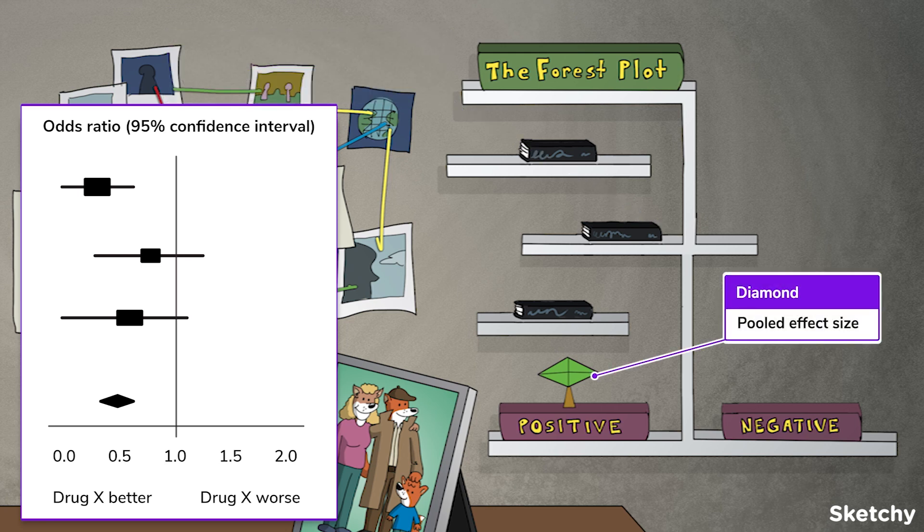If we think of each individual study as a diamond in the rough, then the pooled effect size is a perfectly polished diamond, and the forest plot often uses this diamond to represent the aggregated effect size for the pooled analysis, hence the diamond placed here.